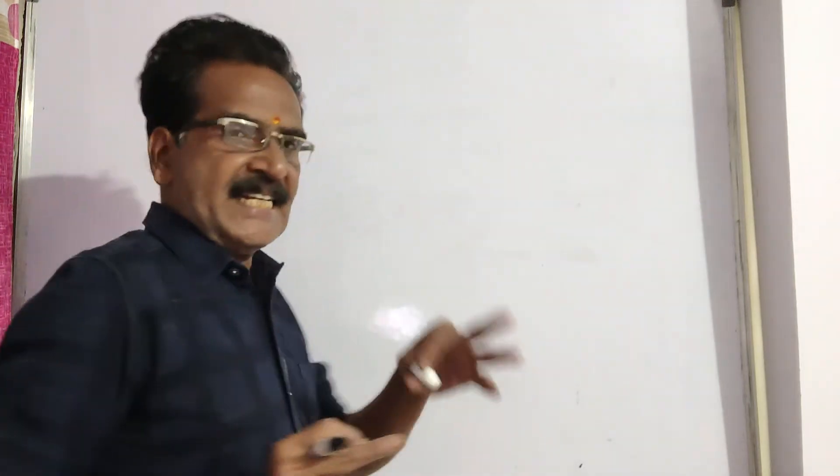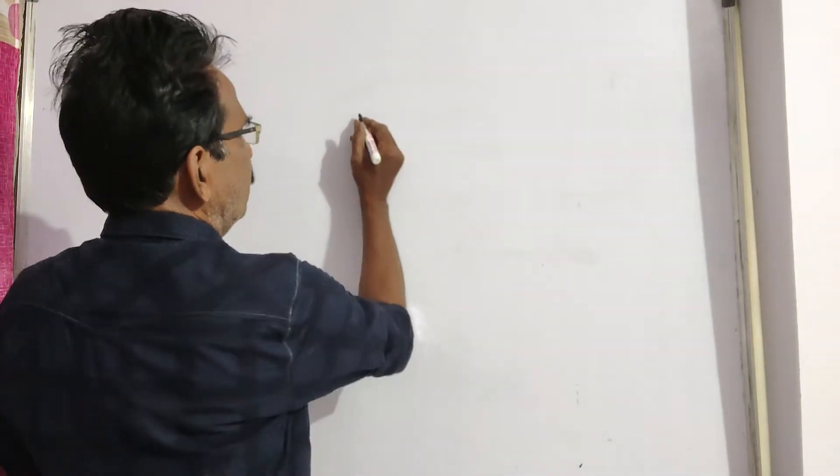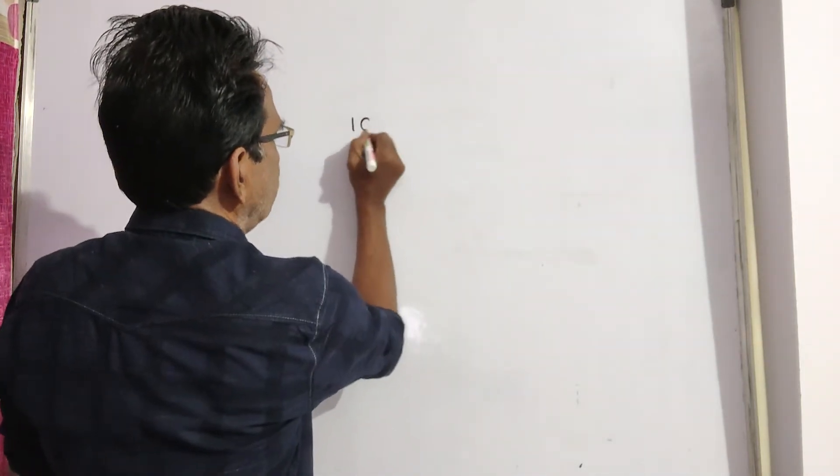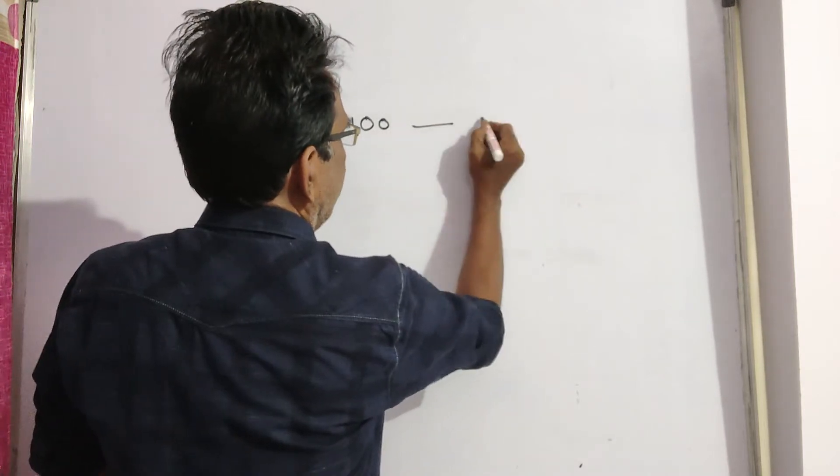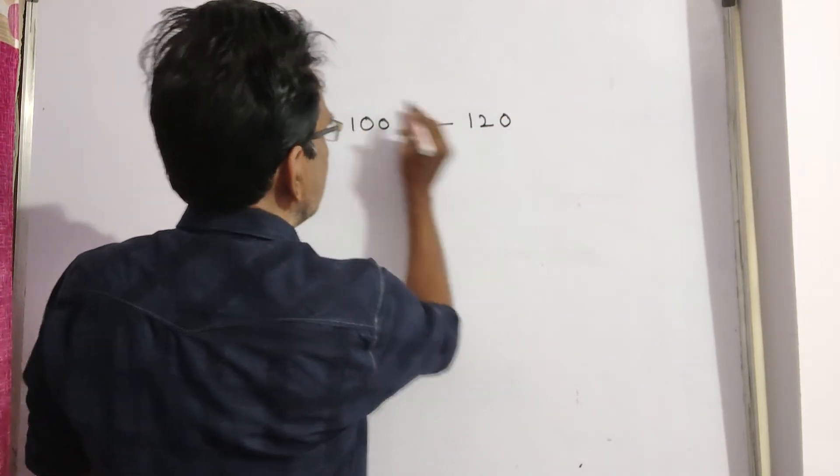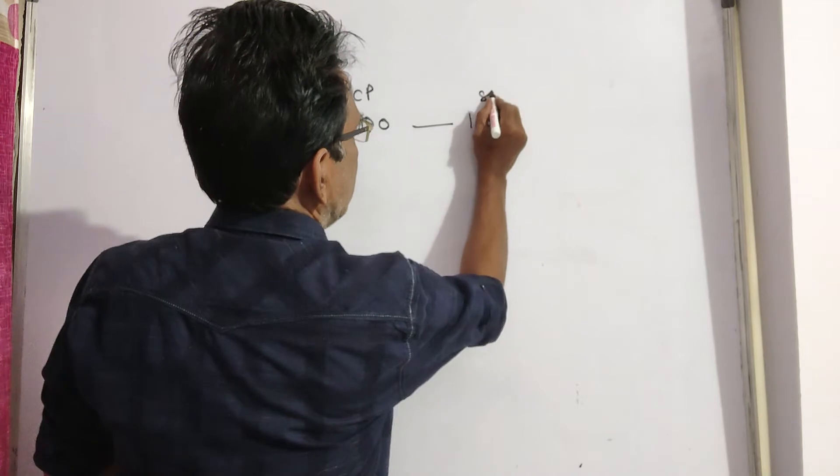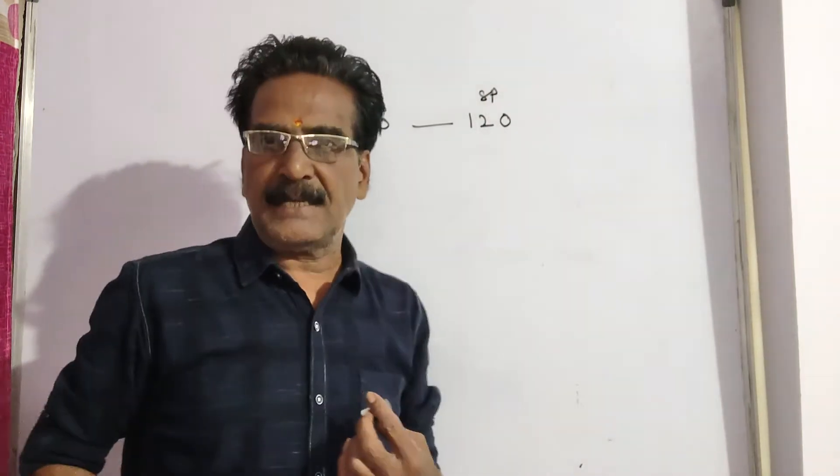Hi friends, good morning. Please look at the next problem in profit and loss. Sunita sells a phone at a profit of 20 percent. So if she sells at a profit of 20 percent, what does it mean? If cost price is 100, then the sold price is 120.